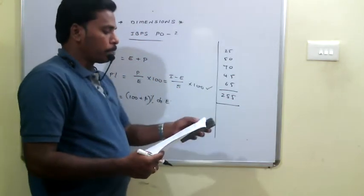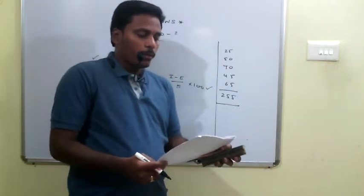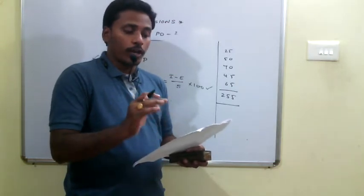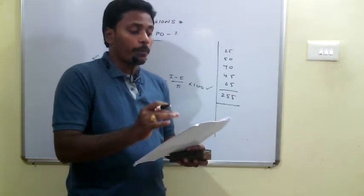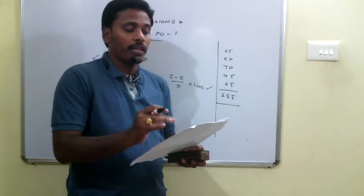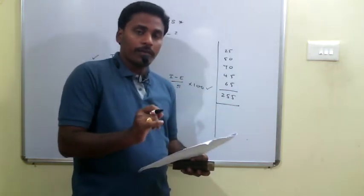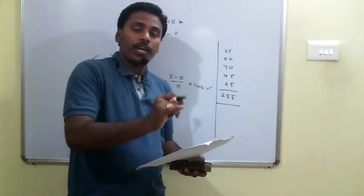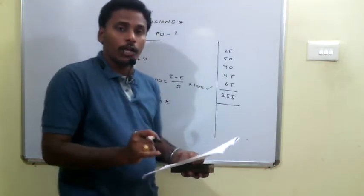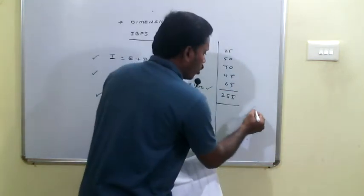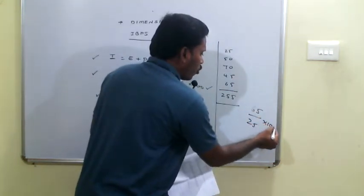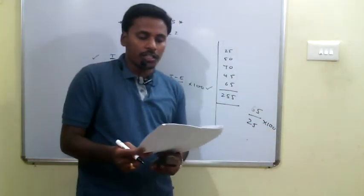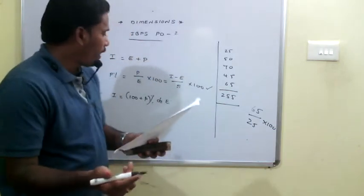Q33: The profit percentage in 2009 is 65 and in 2005 is 25. We need to find 65 as a percentage of 25: (65 / 25) × 100 = 260%. So the 2009 profit percentage is 260% of the 2005 profit percentage.